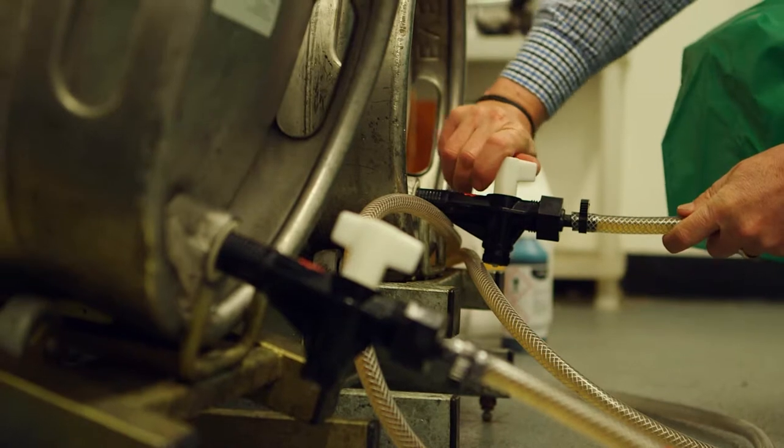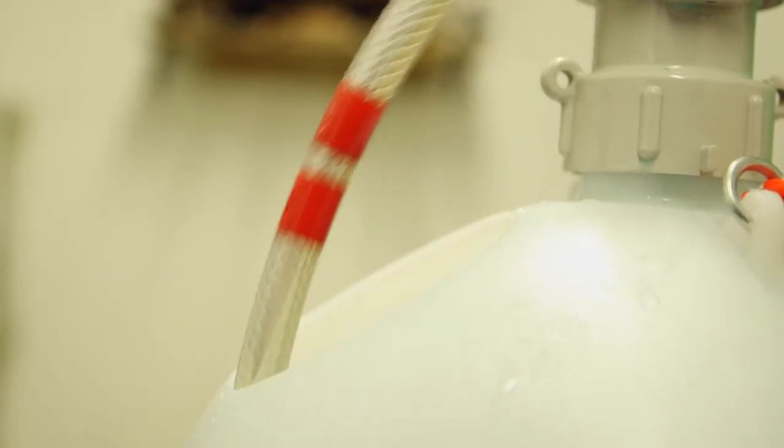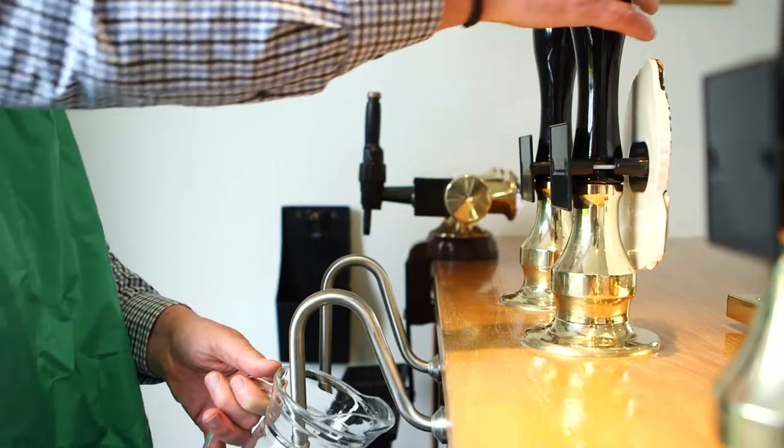Turn off cask tap, disconnect beer line and remove hop seed filter. Drop beer pipes into cleaning bottle. At the bar, chase the beer through with fresh clean water.